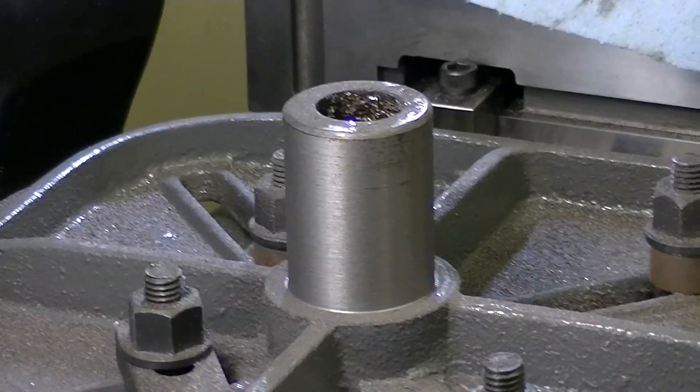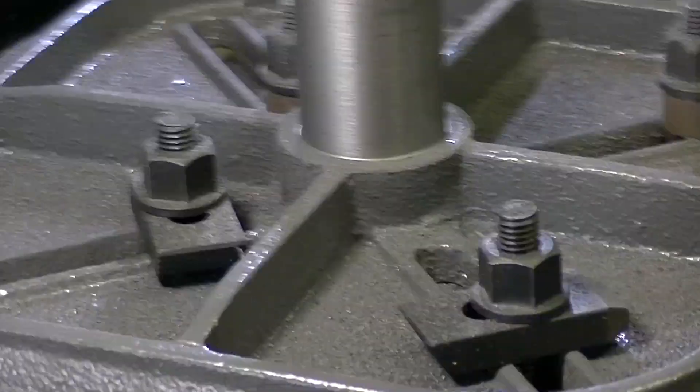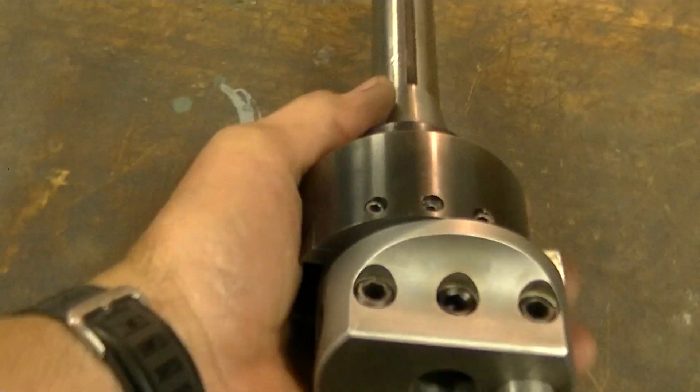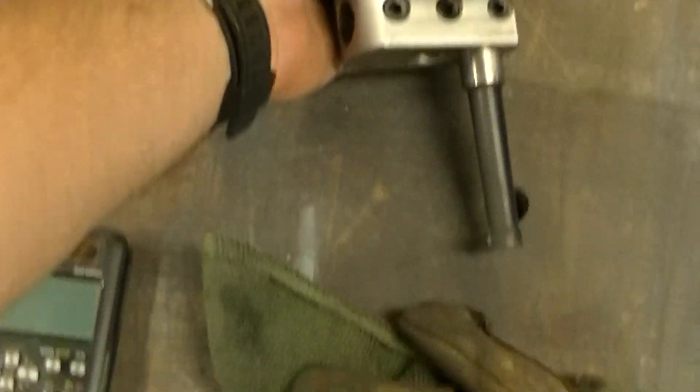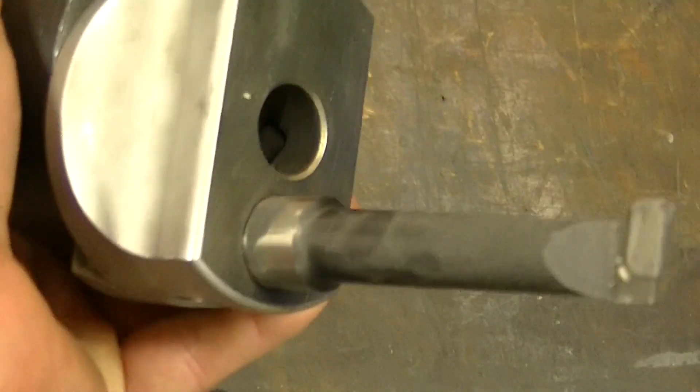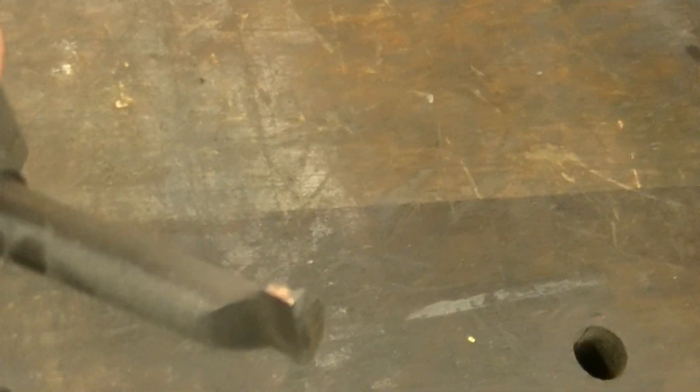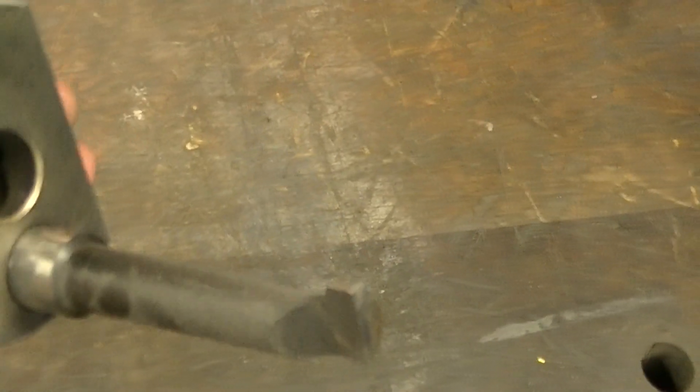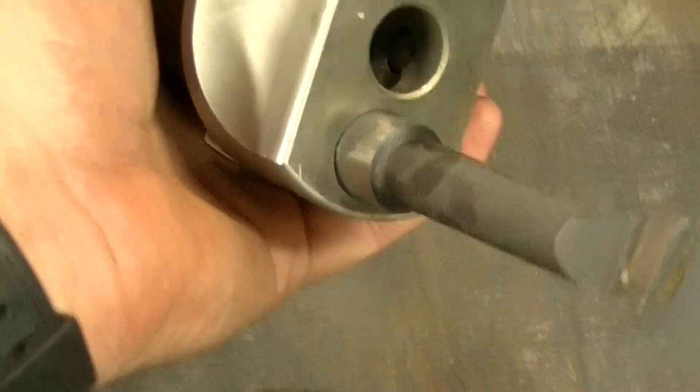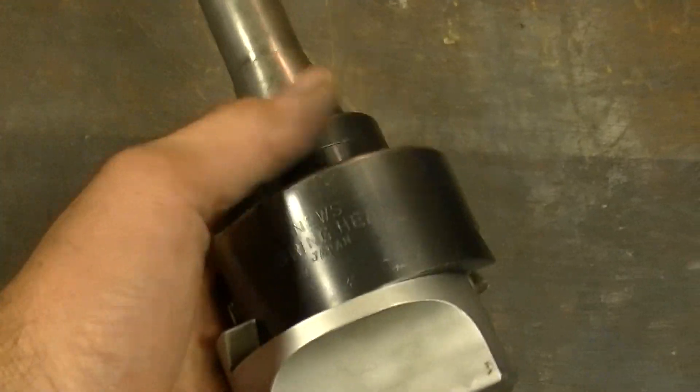And let me just show you what I did that with. Right there. That's the boring head and that is the cutter. It's a half inch shank. And I honed the carbide before, it was brand new, but they need to be honed and touched up. So that worked out quite nicely. Yeah, first time I've used this boring head.